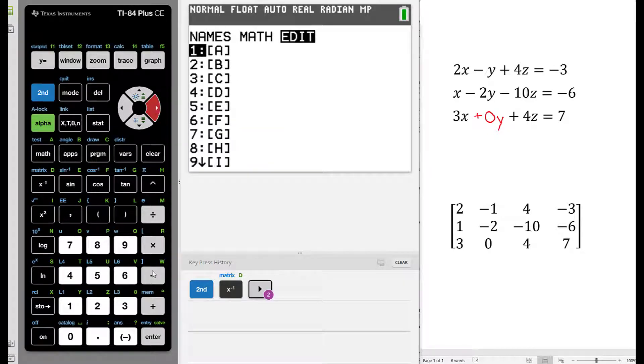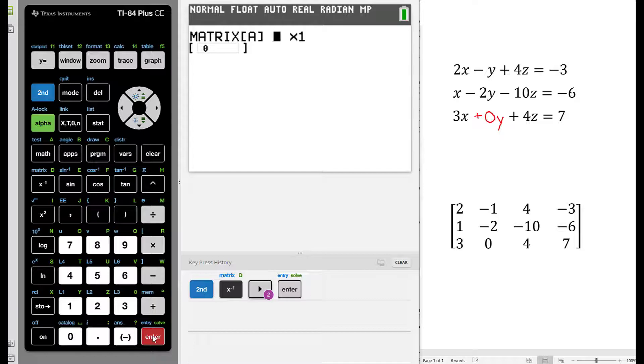Next, we will scroll over to the right two times to edit. We will change that default setting for the order of a matrix. Instead of 1 by 1, we're going to input 3 by 4, because that is the order of our augmented matrix.